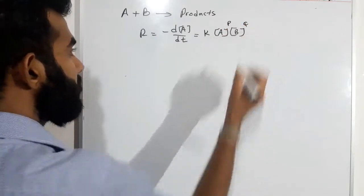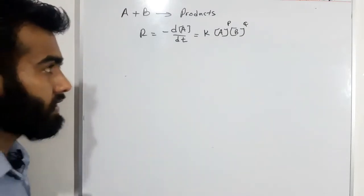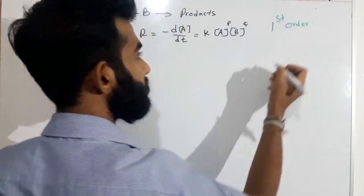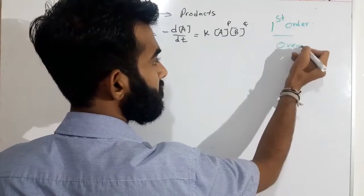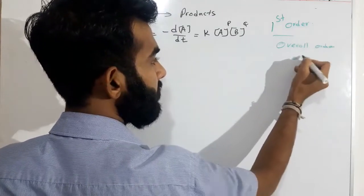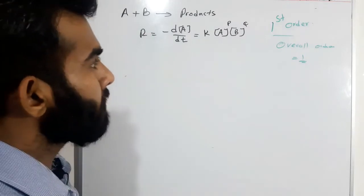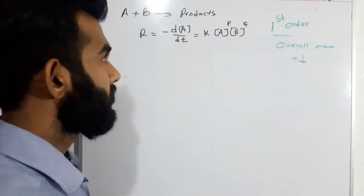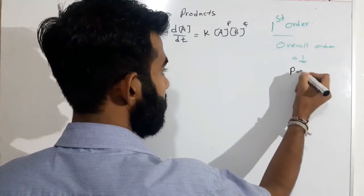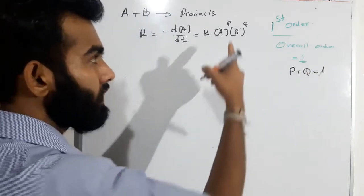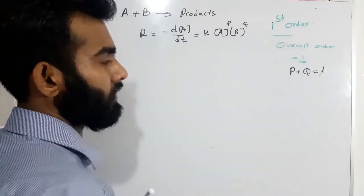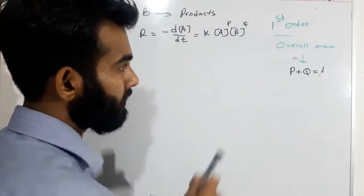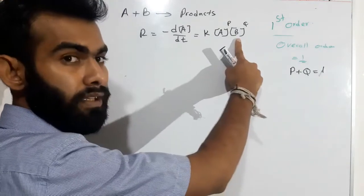P and Q are the orders. If it is a first order reaction, the overall order will be 1. So one of P or Q will be 1 and the other one will be 0 to obtain overall order 1. You can understand that P plus Q should be 1. Here, we will consider A — if its order is 1, then B will have order 0.